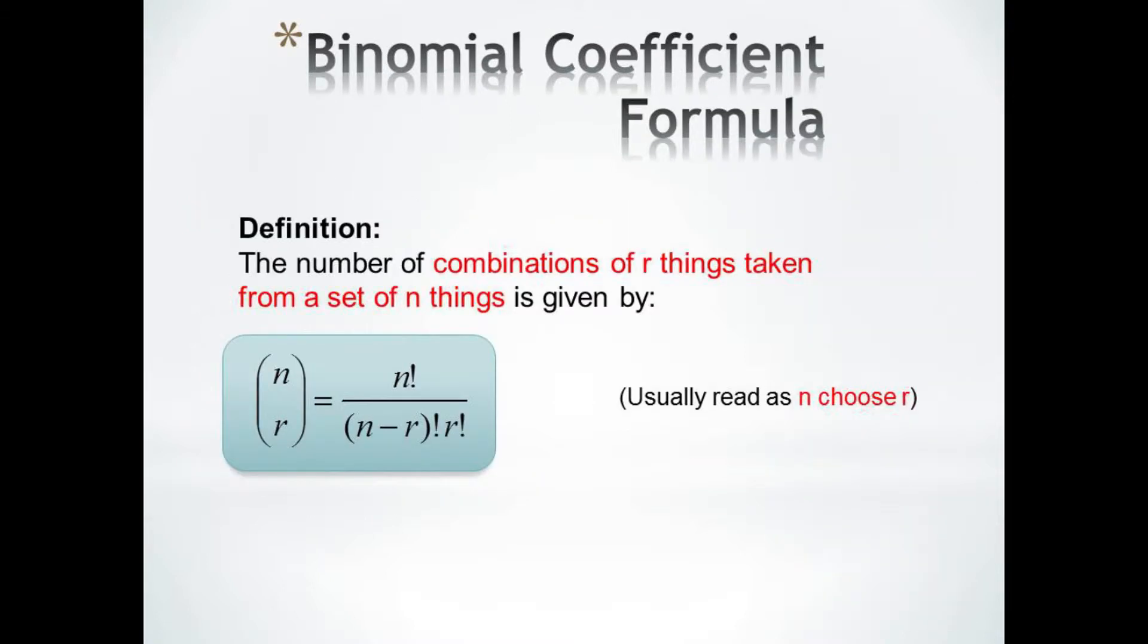Now our binomial coefficient turns out to be the number of combinations of r things taken from a set of n things. It's denoted by this n over r in parentheses, and is given by n factorial over n minus r factorial r factorial. This is usually read as n choose r.